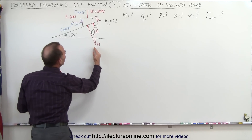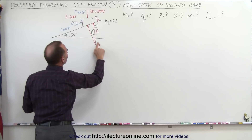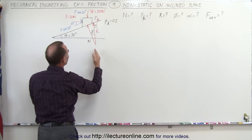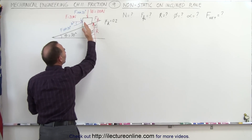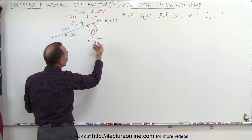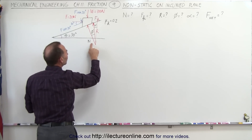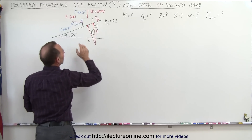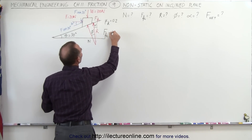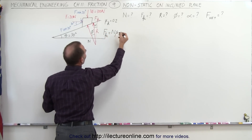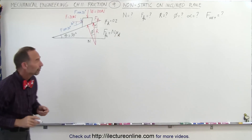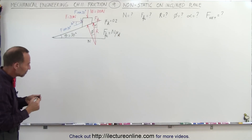There's going to be a normal force — let me draw the N over on this side. The normal force is always perpendicular to the surface. Then we're going to have a resultant force, which is a combination or sum of the normal force and the friction force. By definition, the friction force is always going to be equal to the normal force times the coefficient — in this case the kinetic coefficient of friction because the object is going to be moving.